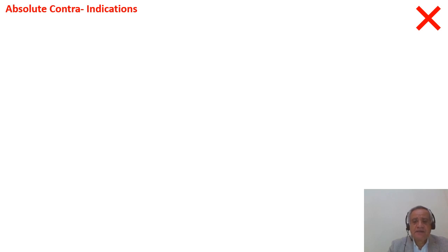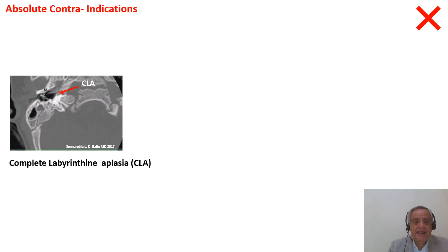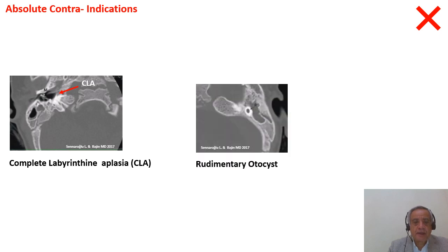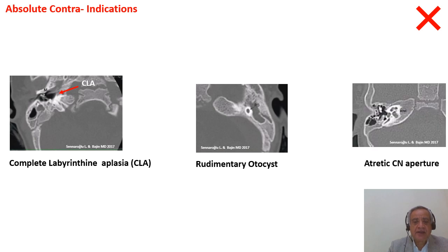I will classify our indications and contraindications into four main categories. The first category is absolute contraindications for CI. The first is complete labyrinthine aplasia, the second is rudimentary otocyst, and the third is the atletic cochlear nerve aperture — what we can call the trapped cochlea.